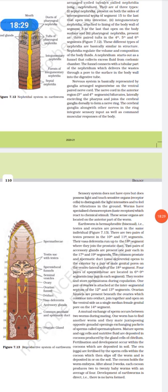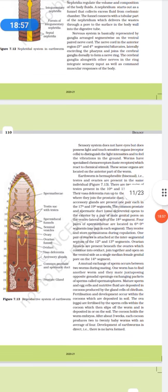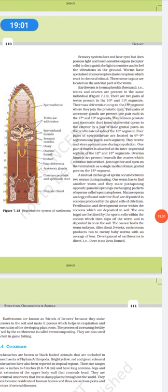Then the nervous system is basically represented by the ganglia, arranged segment-wise on the ventral paired nerve cord. The nerve cord in the anterior region bifurcates, laterally encircling the pharynx and joins the cerebral ganglia dorsally to form the nerve ring. The cerebral ganglia, along with other nerves in the ring, integrate sensory input as well as command muscular responses of the body. Next coming to the sensory system, which does not have eyes but does possess light and touch sensitivity organs to distinguish between light intensities and to feel the vibrations in the ground. Worms have specialized chemoreceptors, which react to chemical stimuli. These sense organs are located on the anterior part of the worm.